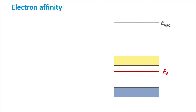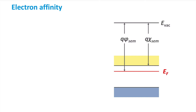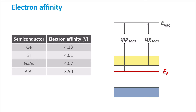Before we can construct the band diagram, we need to know how the band gaps of the different materials will align. This alignment is related to the electron affinity of both materials. As a reminder, the electron affinity is the potential difference between the bottom of the conduction band and the vacuum level. The work function is another important parameter, defined as the potential difference between the vacuum level and the Fermi energy, and is controlled by the doping concentration. In this table you can see different values for the electron affinity of different semiconductor materials, and as you can see, these can change quite a bit.